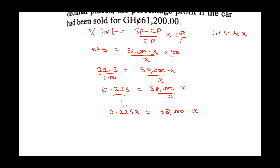Now, taking the X to one side, collecting like terms, this would be 0.225X plus X is equal to 58,000. Sum up X, that is 1X plus 0.225X. This is going to give us 1.225X is equal to 58,000.